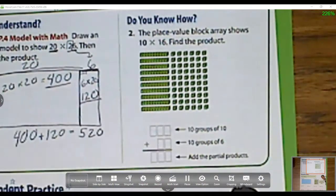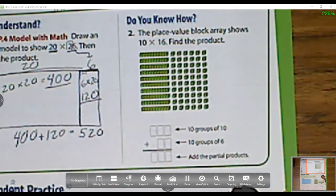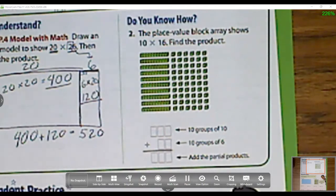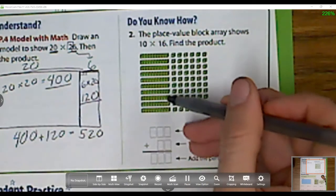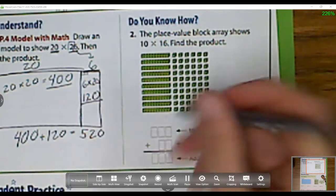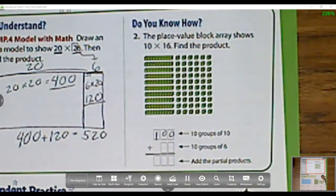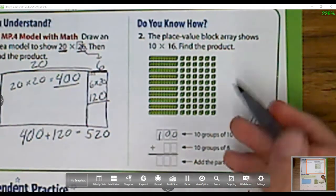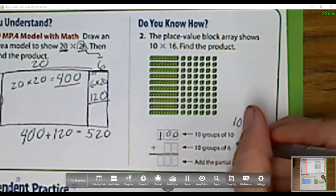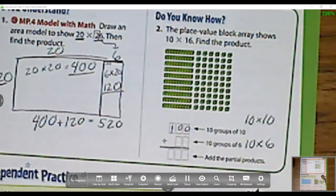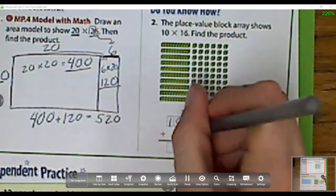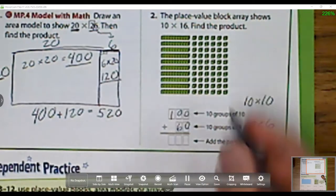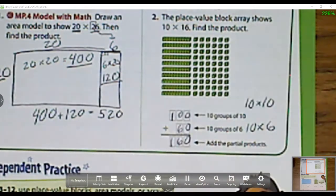Let's head to number 2 now. The place value blocks array shows 10 times 16. Find the product. This first one is saying we have 10 groups of 10. I can count 10, 20, 30, 40, 50, 60, 70, 80, 90, 100. Or I can just know 10 groups of 10 is 10 times 10, which also equals 100. Now it's telling me I have 10 groups of 6, so I have 10 times 6, and I know 10 times 6 is 60. And now I just add them up, so I get 160 for my answer.